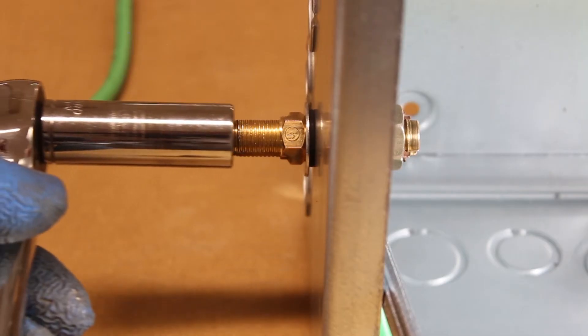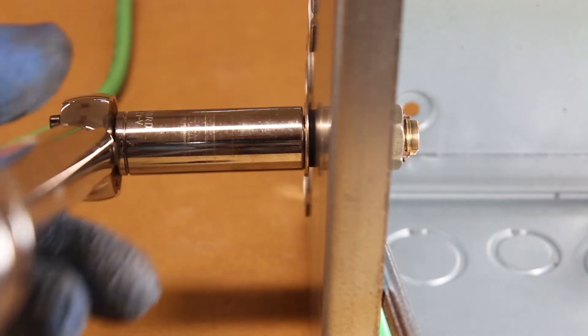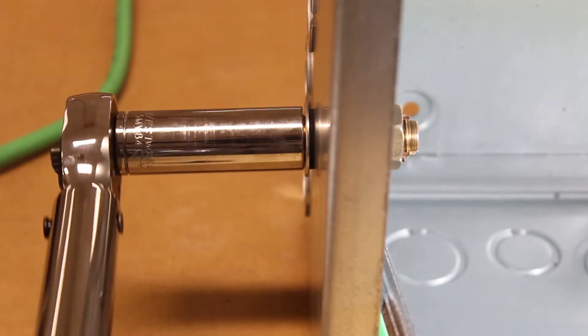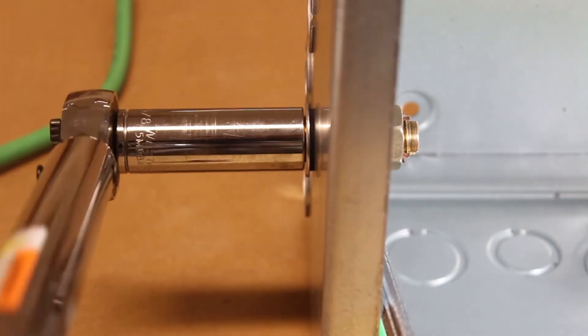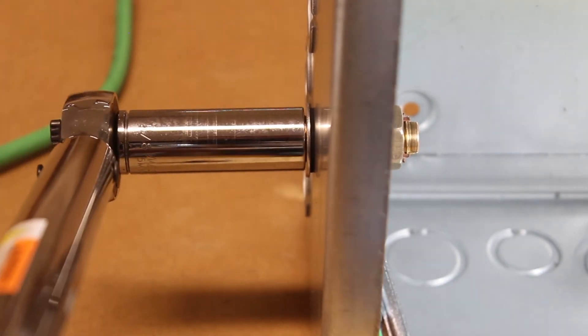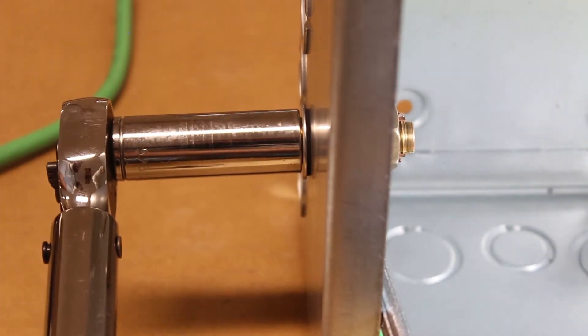A key component to attaining NEMA 4X rating is tightening the components down to the specified torque ratings. With your Burndy torque wrench, torque the connector to the enclosure using the torque specified in the documentation.